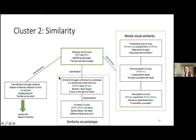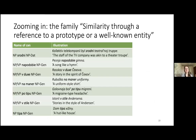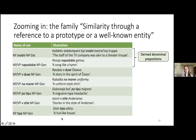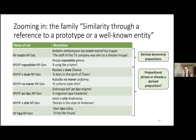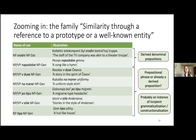Let me zoom into the family 'similarity through reference to a prototype or well-known entity.' All these constructions are very much alike in terms of both semantics and syntax. The anchor words are 'сродни,' 'наподобие,' 'в духе,' 'на манер,' 'по типу,' 'в стиле,' and 'в типу.' The first two are derived nominal prepositions, while the others are prepositional phrases or already derived prepositions — a debatable question likely involving incipient grammaticalization or constructionalization, though this falls beyond the scope of this talk.